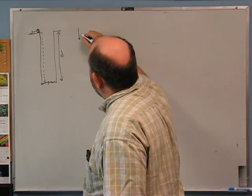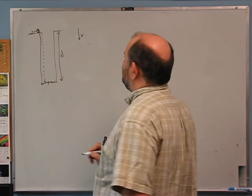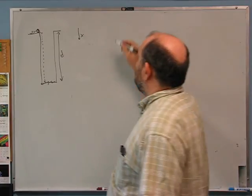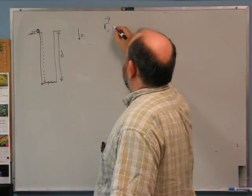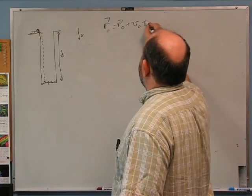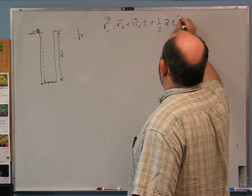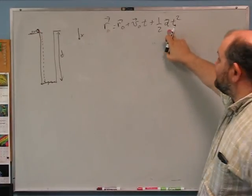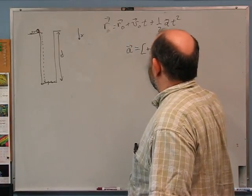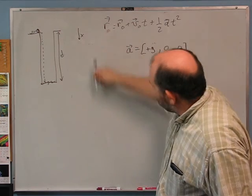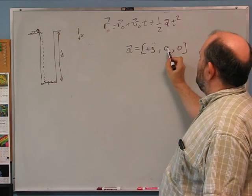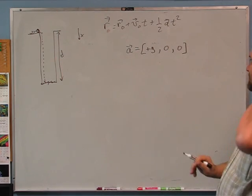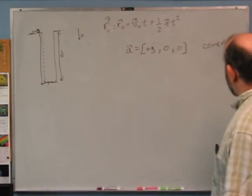All we have to do is figure out the time for the pebble to fall. I'm going to define plus-x as the downward direction, because that's the direction things are moving. X is whichever direction you want. The equation we have is r = r₀ + v₀t + ½at². This works when acceleration is constant. Is the acceleration constant? Yes. In this case, acceleration is +g in the x-direction: (g, 0, 0). Gravity acts downward, plus-x is the downward direction, so there's no component in y or z.